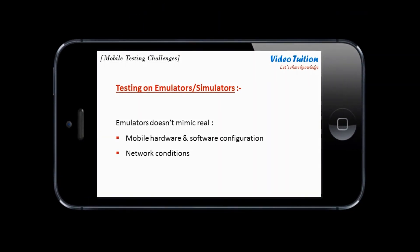A typical mobile application needs to be tested on 5 to 7 iOS and 10 to 15 Android devices. This list grows every quarter, making it almost impossible for organizations to test mobile applications on all target devices. In such cases, emulators are a good choice for mobile applications testing. However, they should never be considered a substitute for real mobile devices as they have their own limitations.